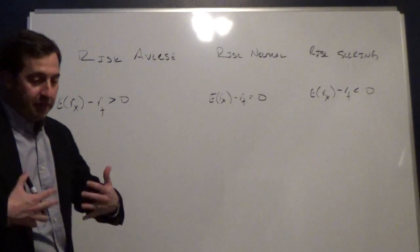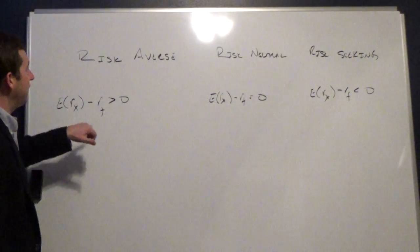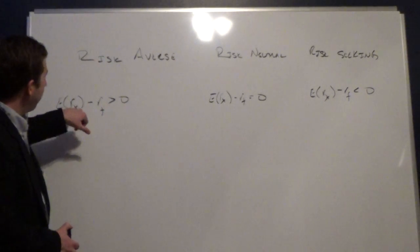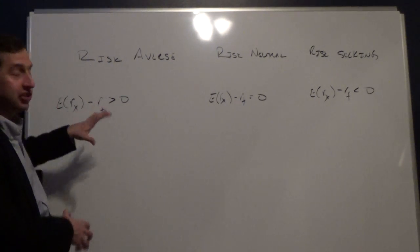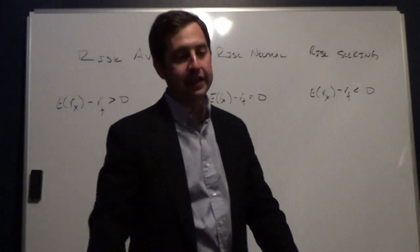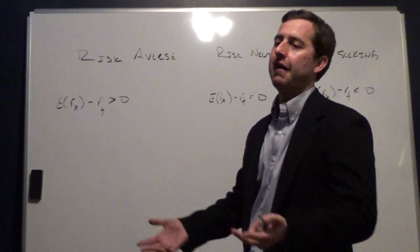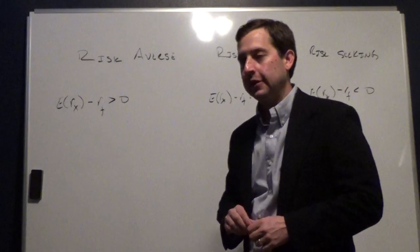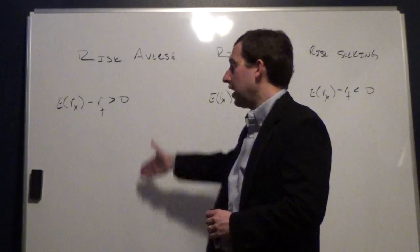From this point forward, we're going to assume that investors are risk averse. What this means is that they will only invest in portfolios where the expected return on some risky portfolio X is greater than the risk-free rate. So if the risk-free rate is five percent, a risk-averse investor will only take on risk if they expect to get more than five percent. This is very natural and makes sense.